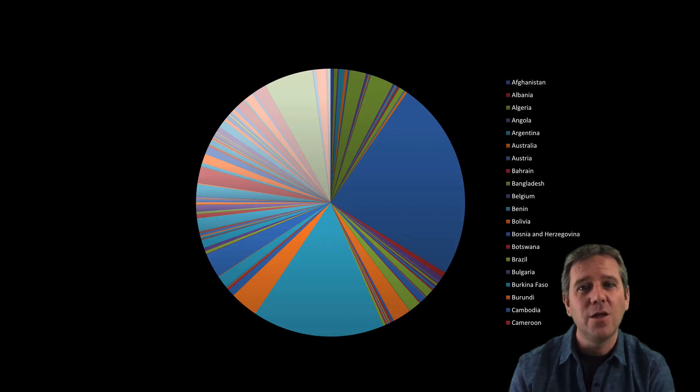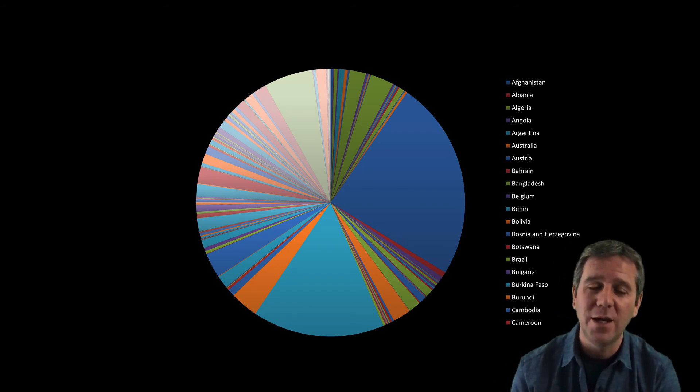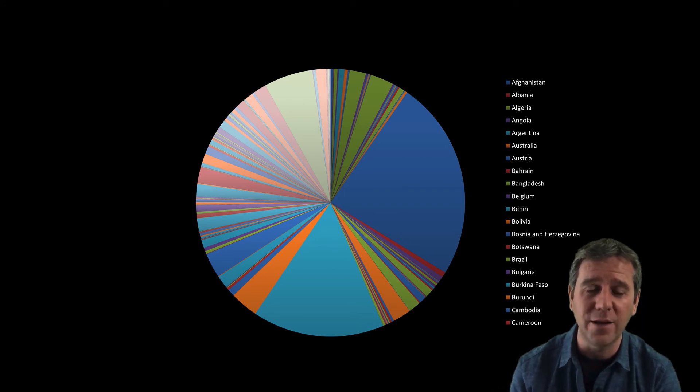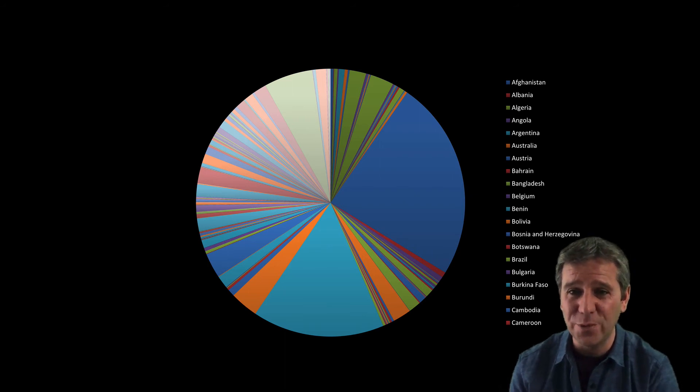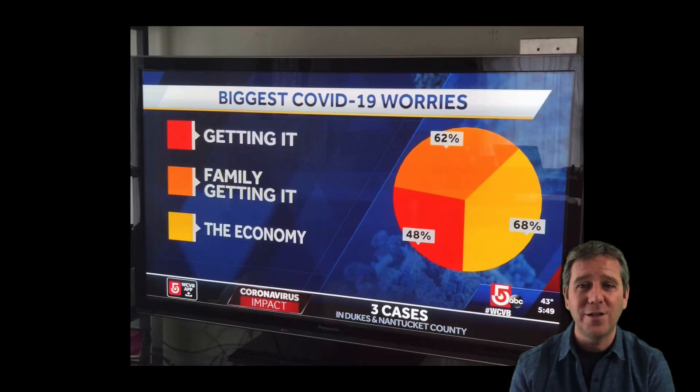He's talking about things like this, and I completely agree—this is an abomination. I took some data and put it into the Numbers program on Mac, clicked the pie chart icon, and this is horrible. What are you meant to get from this apart from there are two big segments? Don't do this.